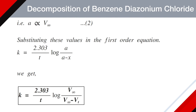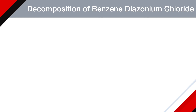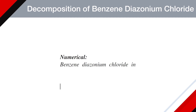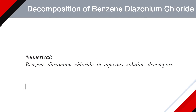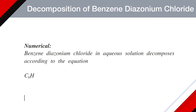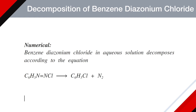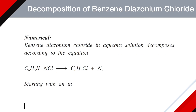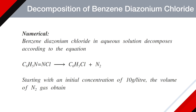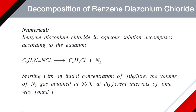This is the expression for the rate constant for the decomposition of benzene diazonium chloride. Now let's try to solve a numerical based on this equation. For example, benzene diazonium chloride in aqueous solution decomposes according to the following equation, producing chlorobenzene and liberating nitrogen gas. Starting with an initial concentration of 10 grams per litre, the volume of nitrogen gas obtained at 50 degrees Celsius at different intervals of time was found to be as follows.